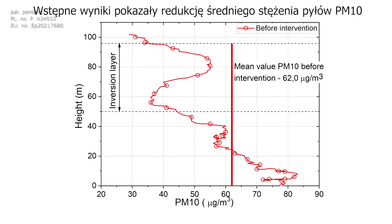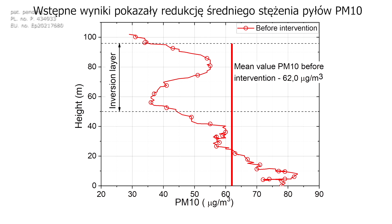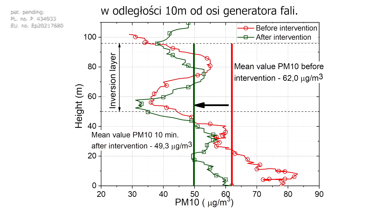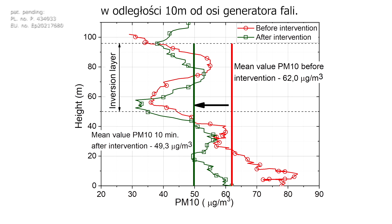The initial results of the device operation show an average reduction of PM10 concentration by nearly 20% in the atmosphere layer at a height of 100 meters, at a distance of 10 meters from the axis of the shock wave's generation.